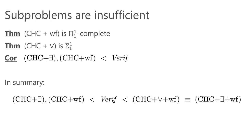Since the satisfiability problem of horn-like clauses is strictly harder than the verification problem, it is natural to ask if there is an easier subproblem to which the verification problem is reducible. Unfortunately, the well-foundedness predicate alone is less expressive than needed, and disjunctive horn-like clauses alone are also insufficient. In summary, the subproblems we studied are either strictly harder or strictly weaker than the verification problem. We left it for future work to find a subproblem equivalent to the branching time property verification.